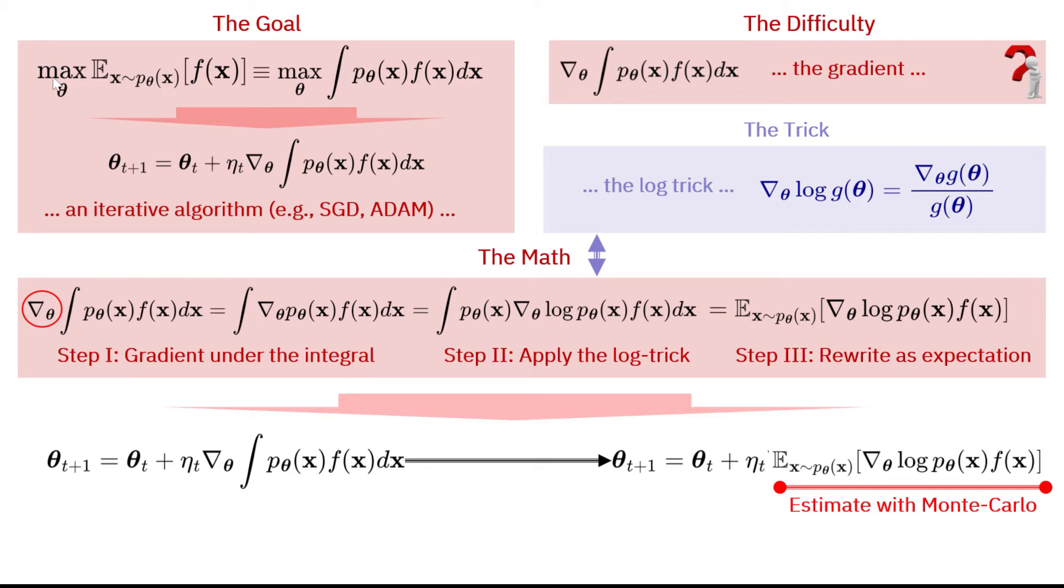Now, notice that if you had a minimization problem, this would have been a negative, so it will be theta t minus eta t. But now, because I'm just considering the maximization, I'm just adding eta t gradient of this integral.